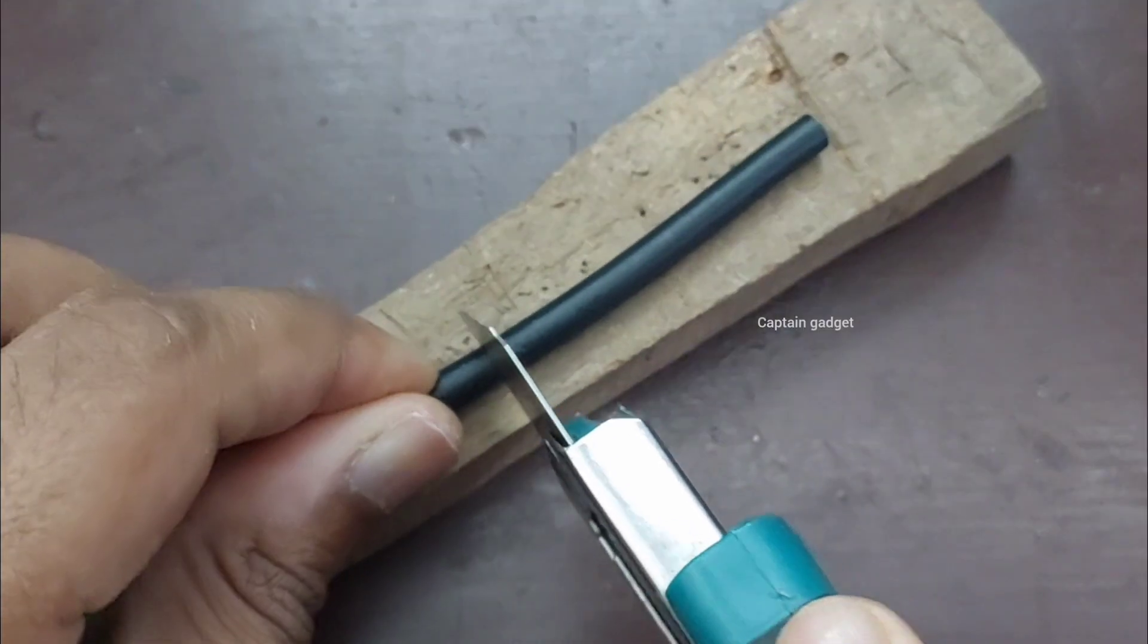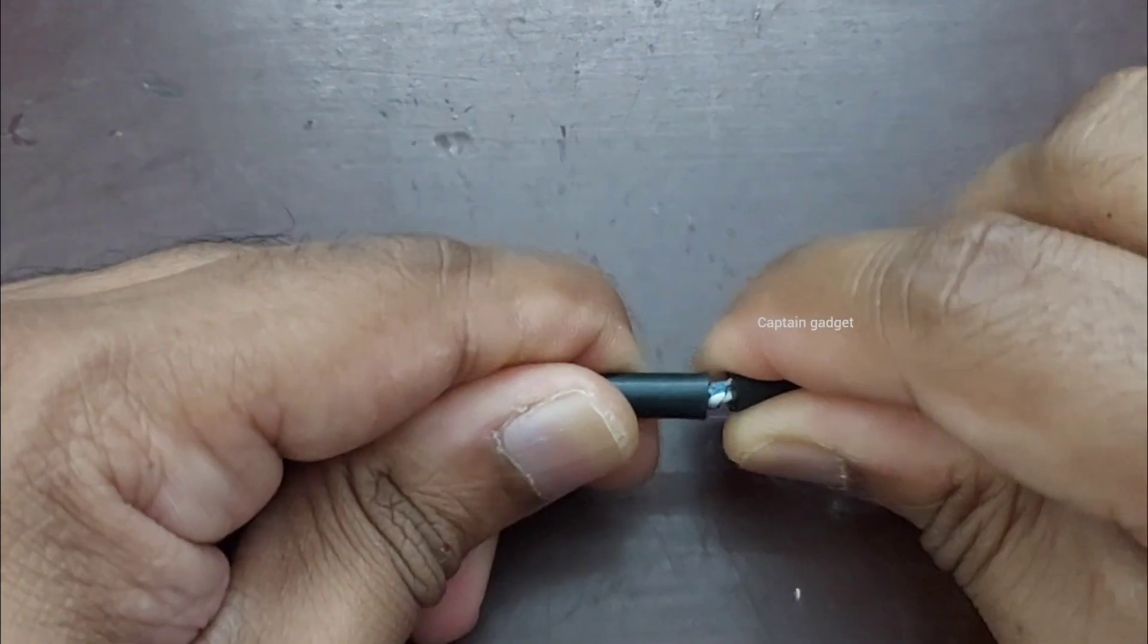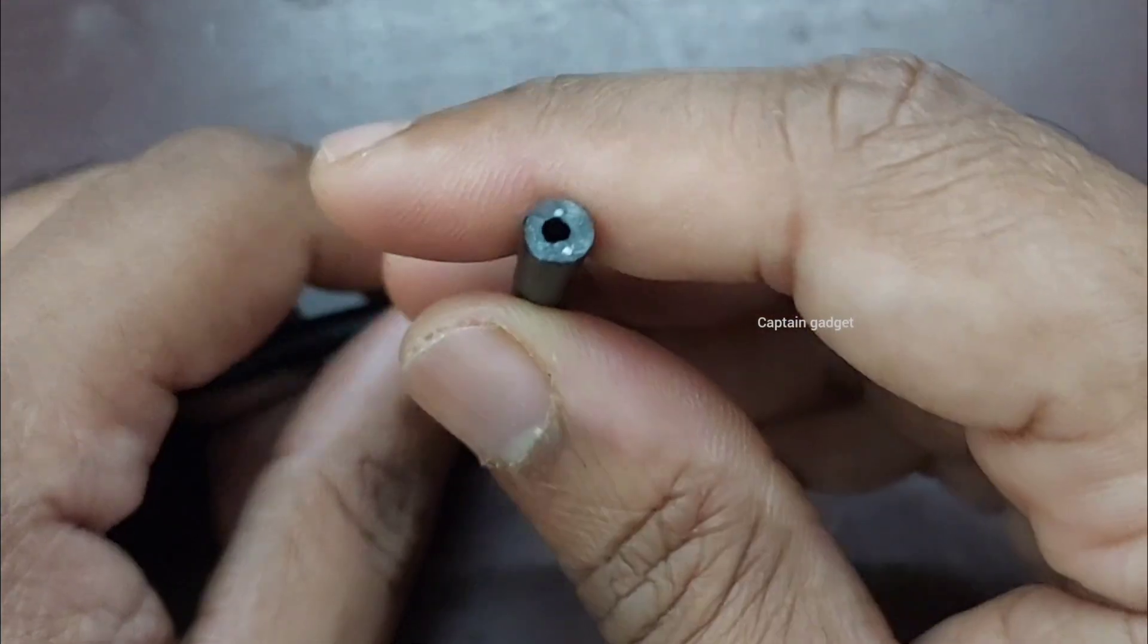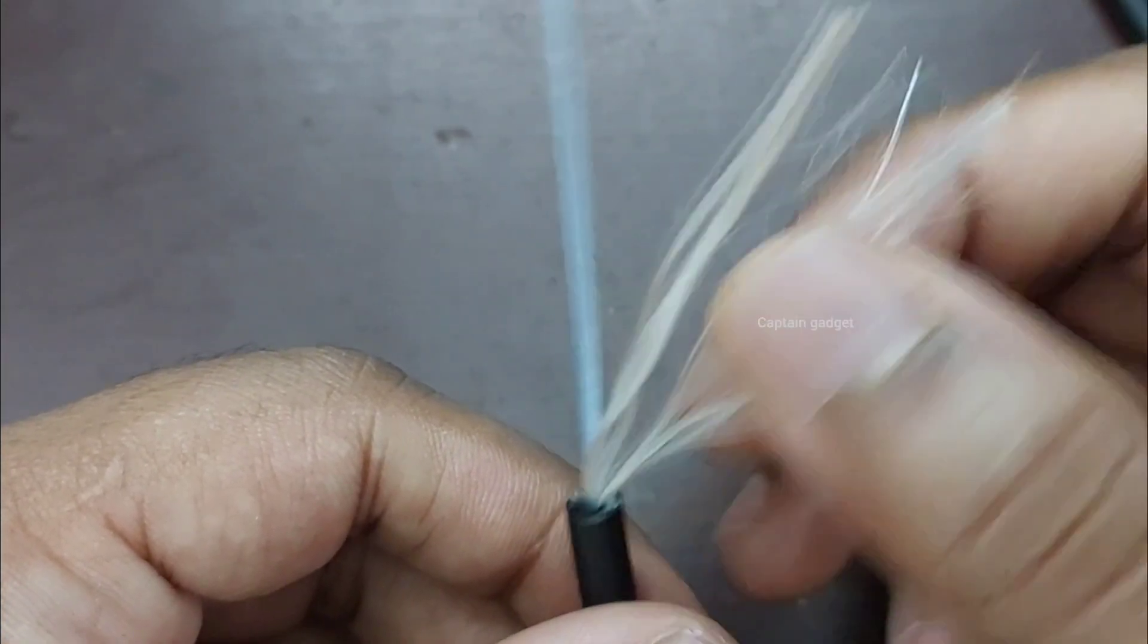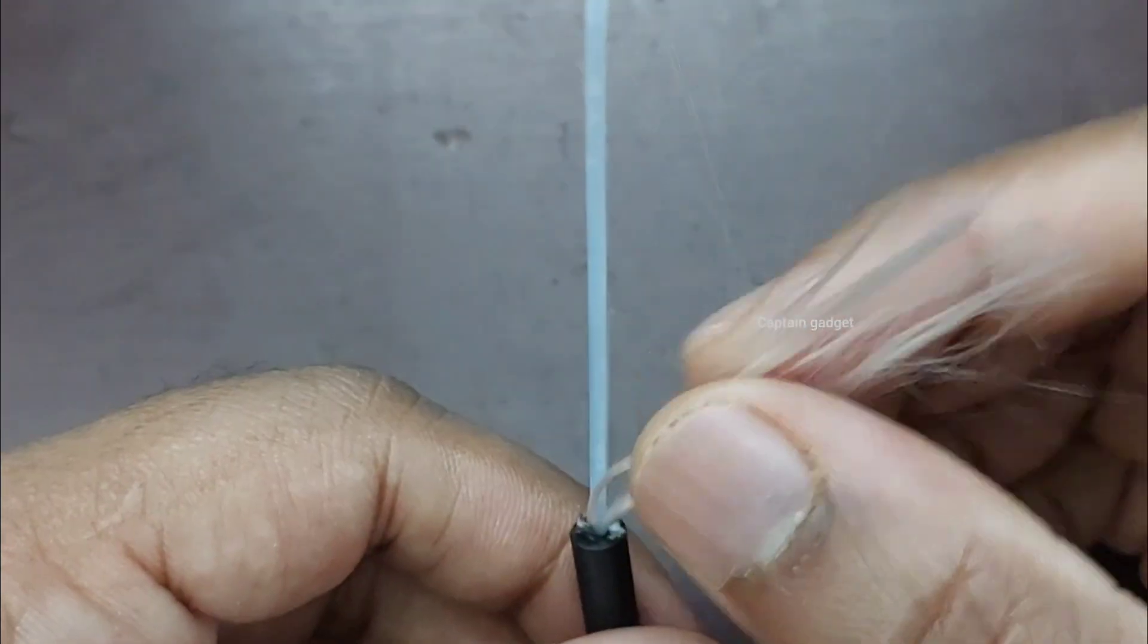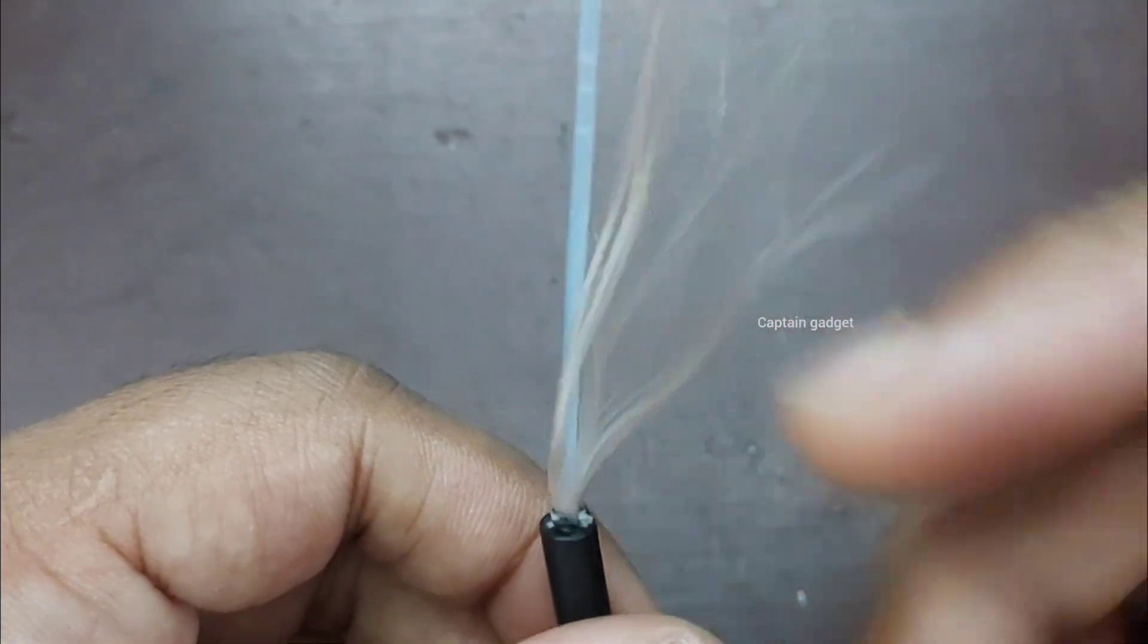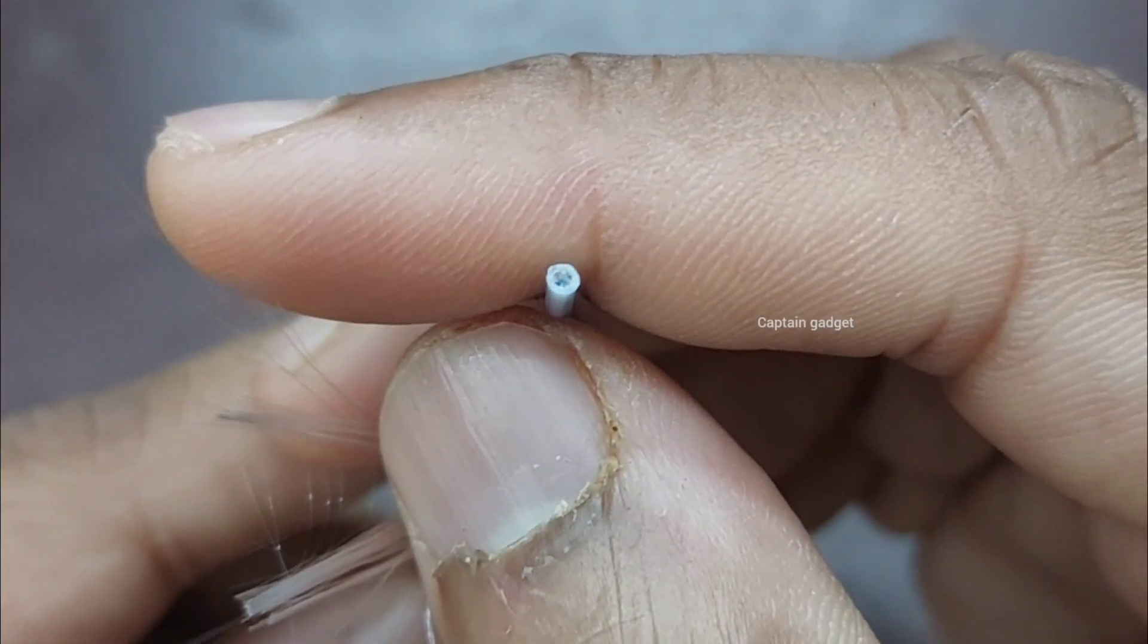Let's cut it open. This is the outer protective jacket. This is yarn—it prevents the cable from stretching or breaking when it's subjected to tension. This is the buffer tube filled with gel.